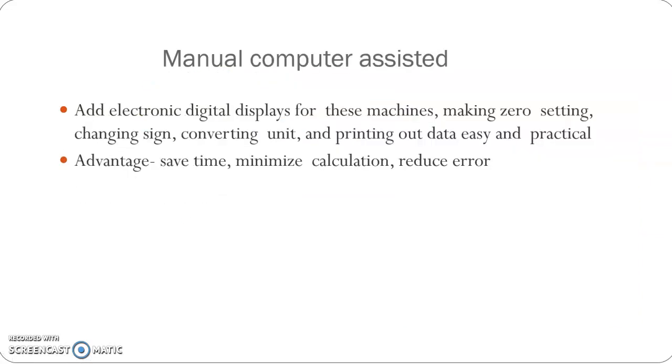In manual computer assisted, the movements are manual only, but some applications use a computer. Making zero setting is one application, changing sign, converting unit, and printing out data. These kinds of processes are done using computer. That is known as manual computer assisted CMM.